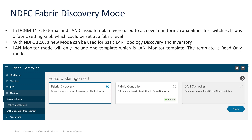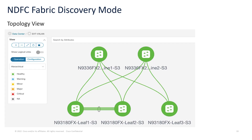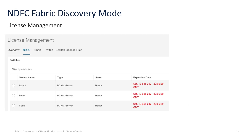In Fabric Discovery Mode, we use the LAN Monitor template, which is a read-only template. Once a fabric is created with this template and switches are discovered, we can view switches, links, interfaces, inventory, topology, licenses, and more. We have a similar topology view, with the Operation tab more relevant here than the Config tab. All alarms detected are visible, the user can be alerted on events at the switch and fabric level, and license management is also available. There are many benefits to using Discovery Mode — if a user isn't ready for controller mode, they can start here and move to Fabric Controller mode when ready.